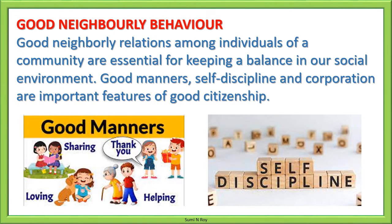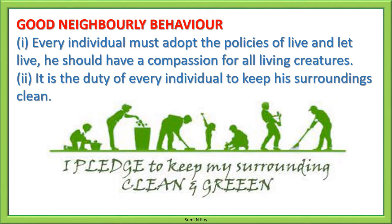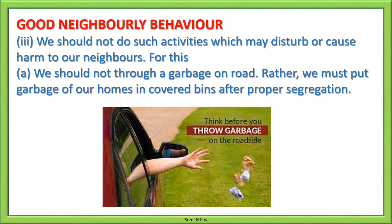Good neighborly relations among individuals of a community are essential for keeping a balance in our social environment. Good manners, self-discipline and cooperation are important features of a good citizen. Every individual must adopt the policy of live and let live, have compassion for all living creatures, and keep their surroundings clean and green. We should not do activities that may disturb or harm our neighbors — do not throw garbage on the road; instead, put garbage in covered bins after proper segregation.